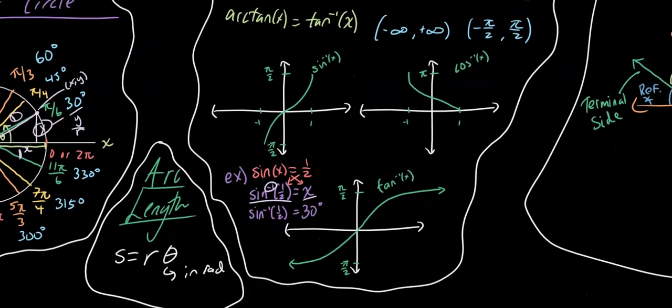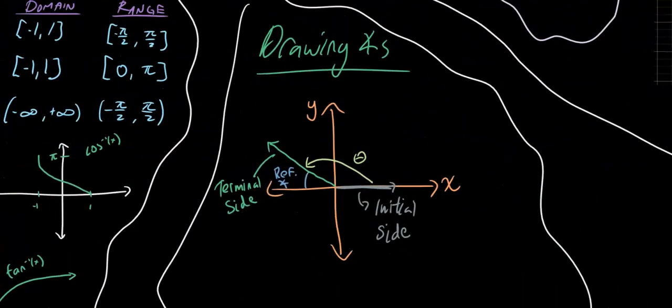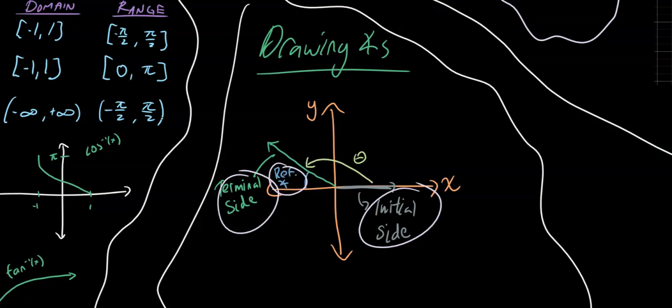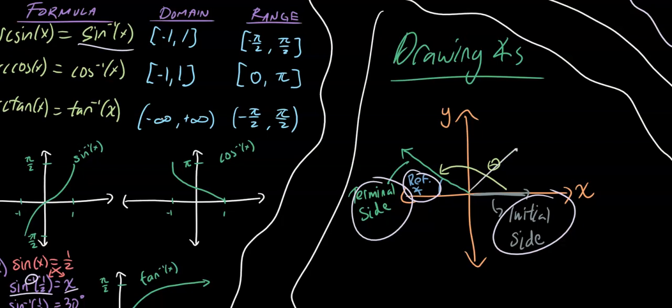I also included some graphs of the functions. These all have restricted domains and ranges, because inverse functions must be one-to-one functions. Normally trig functions are not one-to-one, but they are if we only draw them for a certain domain. Here's how we might draw an angle. We have the initial side, the reference angle, and the terminal side. These are restricted to different quadrants, so you may need to find the angle in one quadrant and then add or subtract to get the angle in another.